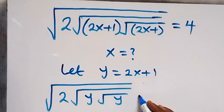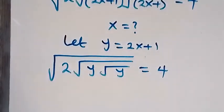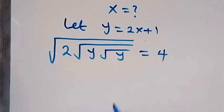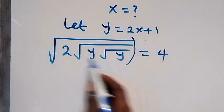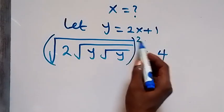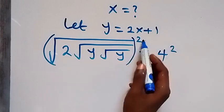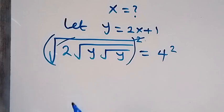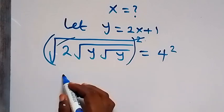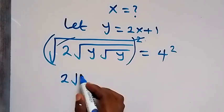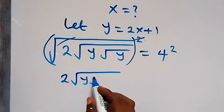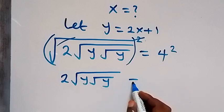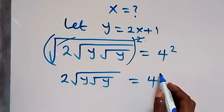This equals 4. From here we square both sides to remove the outer square root — square this side and also square this side. This square cancels the square root, and we are left with 2 times square root of y, times square root of y, which is equal to 4 squared.